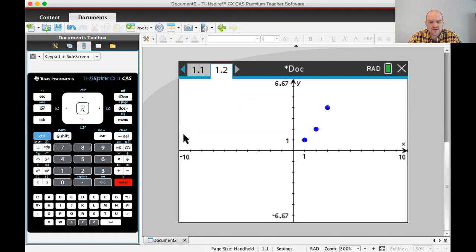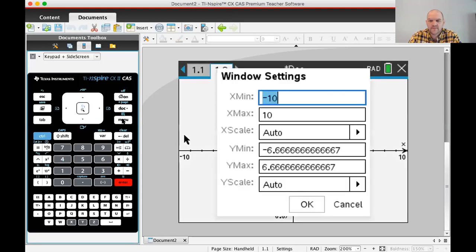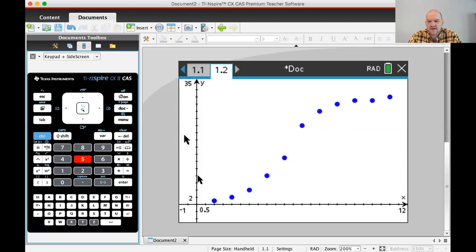And then we can set the window because we pretty much know what's happening. So menu 4, 1. I'm going to go negative 1 to 12 because I know I need to go 1 to 11. And I'm going to go negative 5 to 35 because the data starts at 1 and goes up to 30. This should give us a pretty good picture. And yeah, you can see this is pretty good.